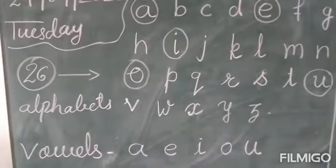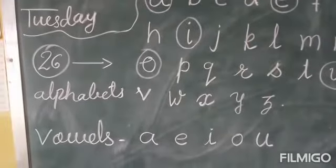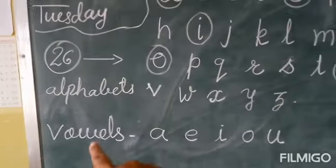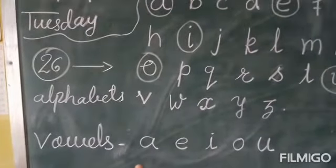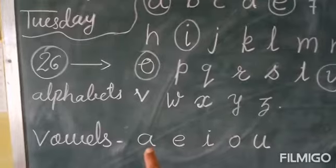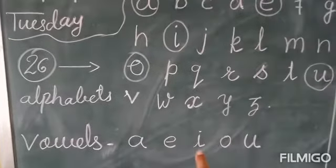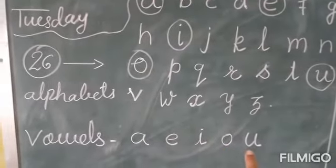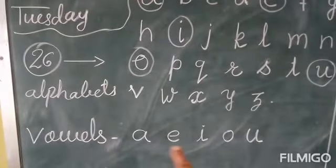These are called vowels. What are vowels? A, E, I, O, U. These are called vowels.